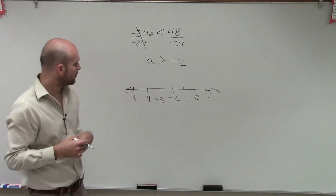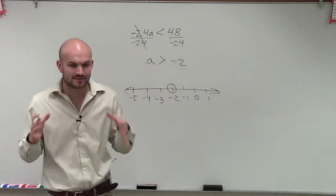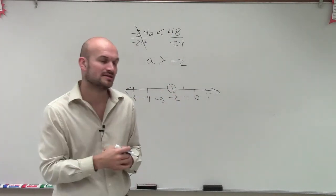OK. So we know that a is greater than negative 2. So we're going to start at negative 2. But when we graph a solution, we shade it in. That means it's a point. That's a part of our solution.